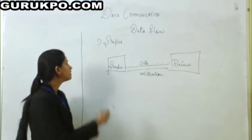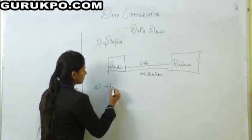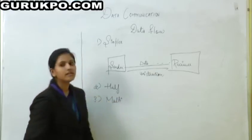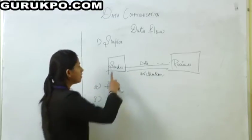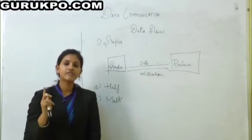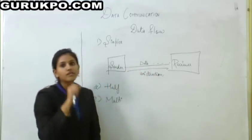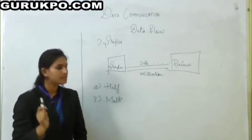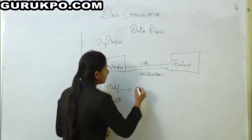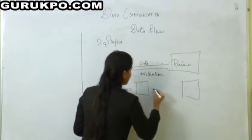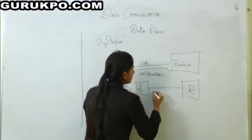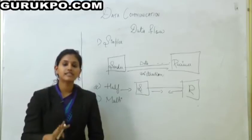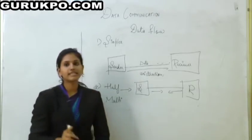Now we have data flow. There are three types of data flow: first simplex, second half duplex, and third full duplex. In simplex, a sender and a receiver have a unidirectional path. Data flows in a single direction only — when the sender sends data, the receiver cannot send data back. In half duplex, both sender and receiver can send data but not at the same time — only one at a time.